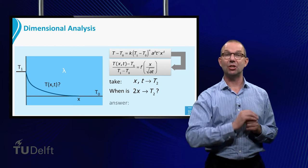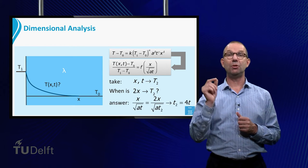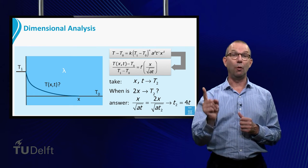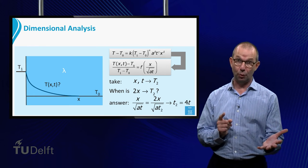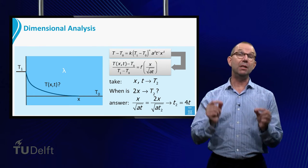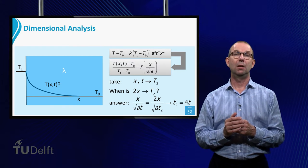The dimensional analysis tells us that for a temperature T2, the ratio of x over the square root of AT must be the same value.